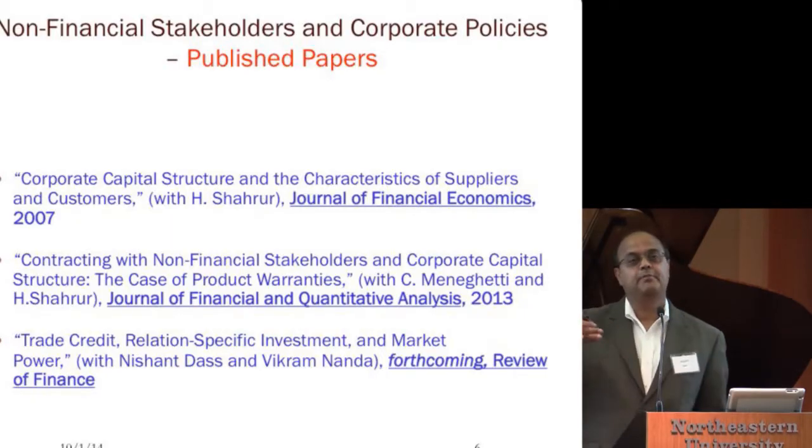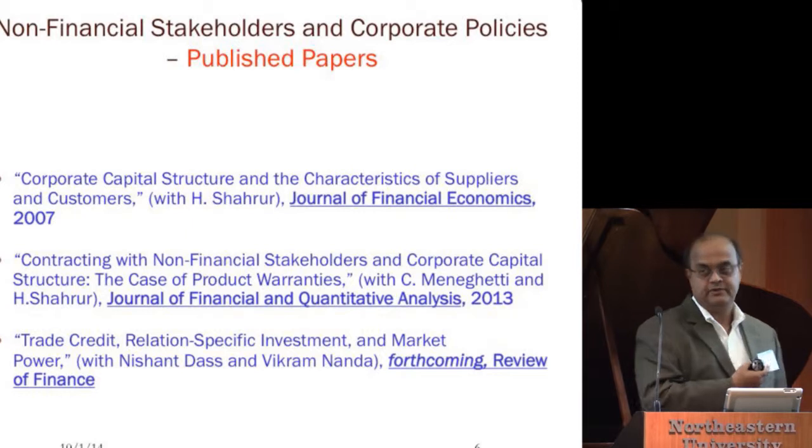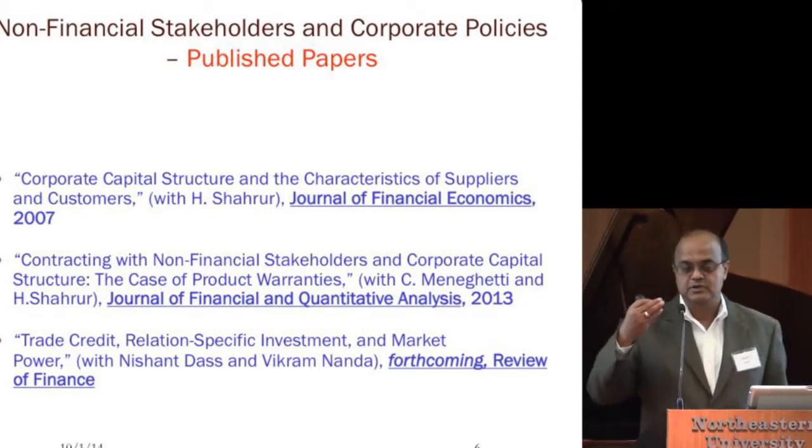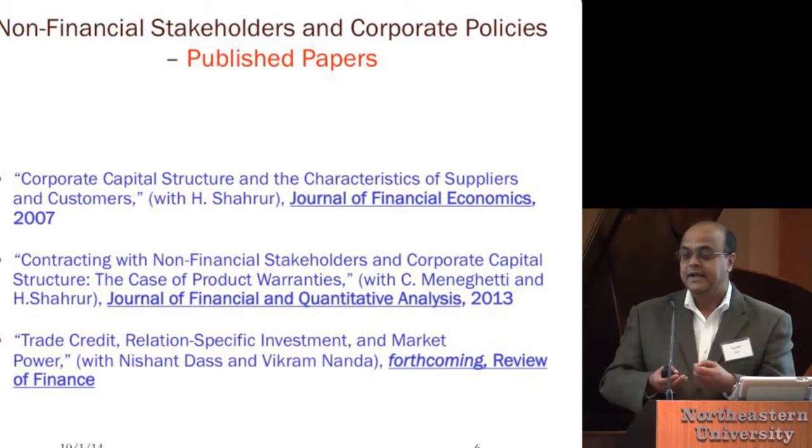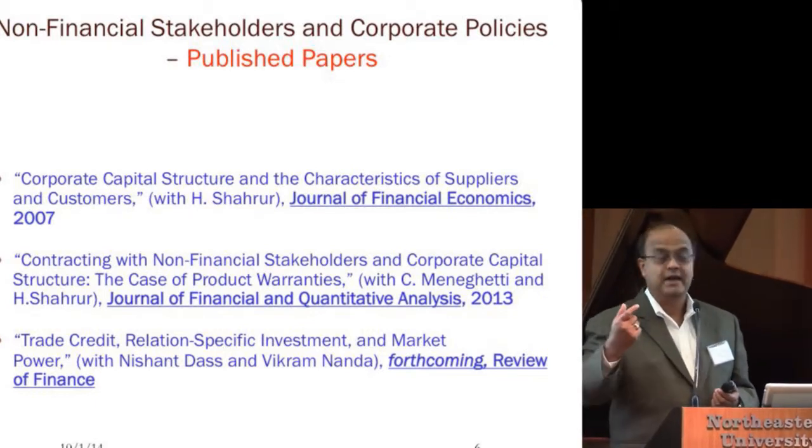The last paper in this group is more recent. We look at the role trade credit plays as a commitment device in the relationship with suppliers. Suppose I'm a supplier to your firm and I give you an input that is supposed to have certain properties, but just by looking at it you cannot tell whether I put in enough technology or R&D. We show that extending you credit is a way of committing that I have actually put in the necessary amount of R&D into making that product. We have a theoretical model and also show empirically that this is indeed true.